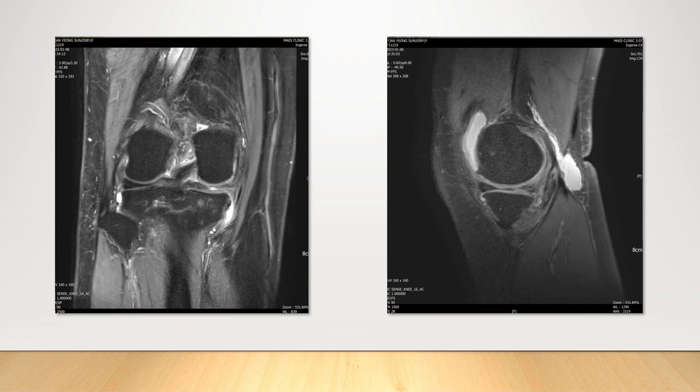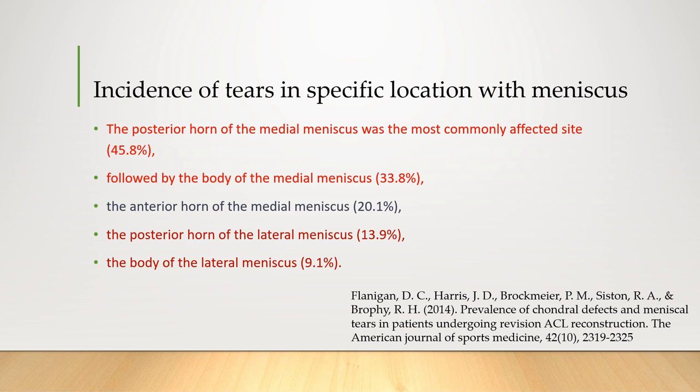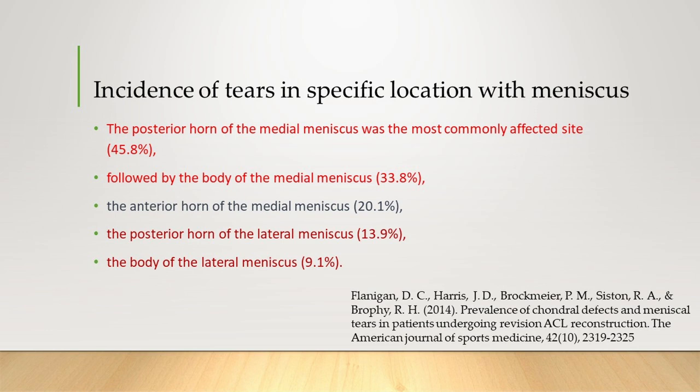I introduced one article. In terms of specific locations within the meniscus, the study found that the posterior horn of the medial meniscus was the most commonly affected site at 45.8%, followed by the body of the medial meniscus at 33.8%, the anterior horn of the medial meniscus at 20.1%, the posterior horn of the lateral meniscus at 13.9%, and the body of the lateral meniscus at 9.1%.